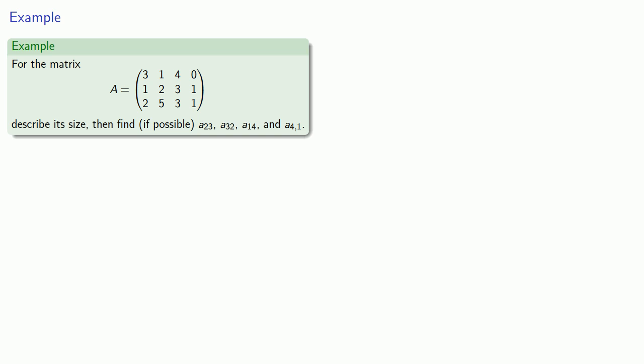So the first thing we'll note is that this matrix has 3 rows and 4 columns, so this is a 3 by 4 matrix. Next, A23 refers to the entry in the 2nd row, 3rd column, and we find that that entry is 3.